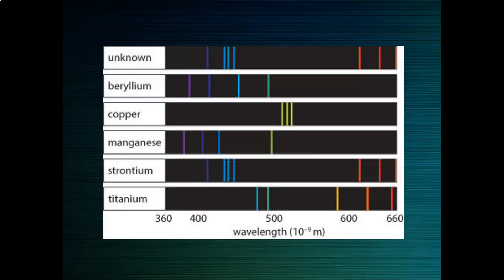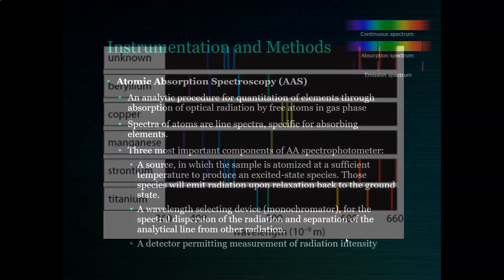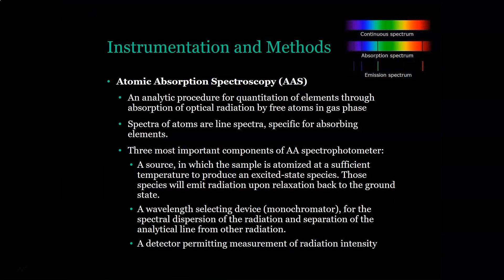This is an example of some AES spectra, with readings for elements such as beryllium, copper, and manganese — this is the type of output you would expect to get.